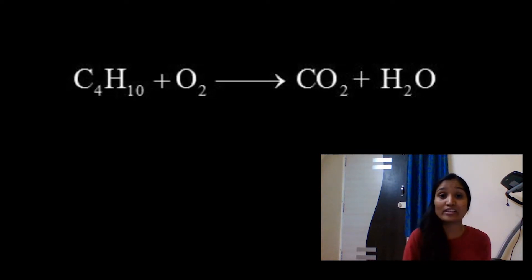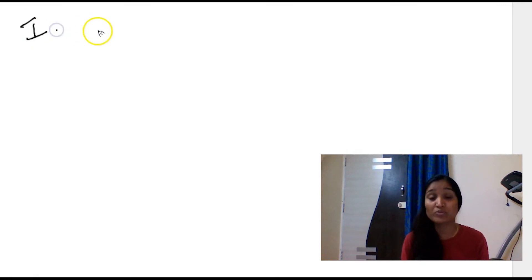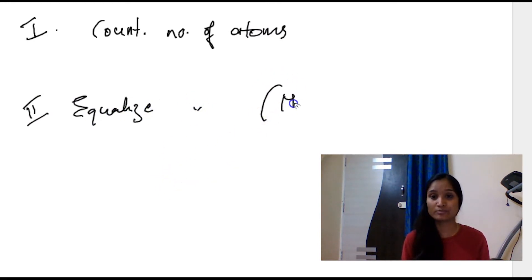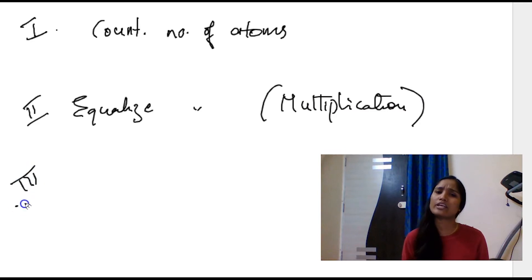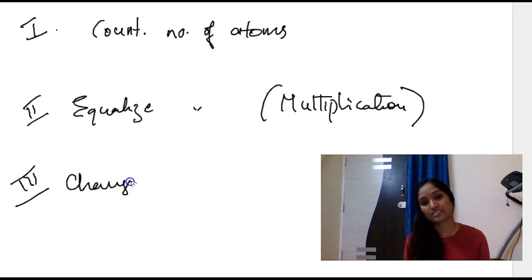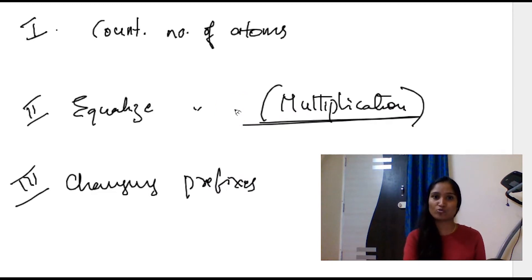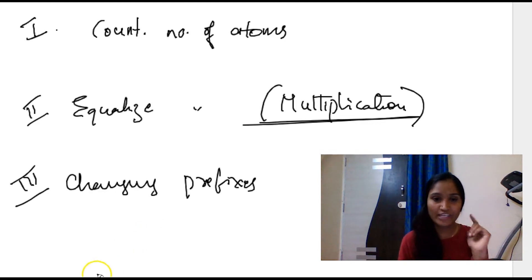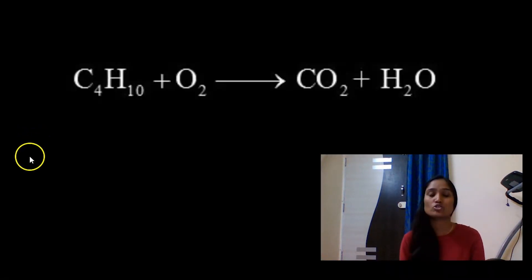When balancing a chemical equation, there are three steps. Step one: count the number of atoms. Step two: equalize the number of atoms using multiplication — nothing else. Step three: change the prefixes of the chemical equation using the numbers you multiplied with. How to count and what a prefix is — we discussed all of that in the first video, so go back and watch if you missed it.